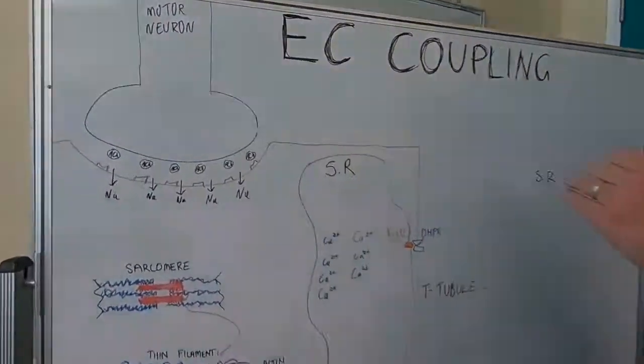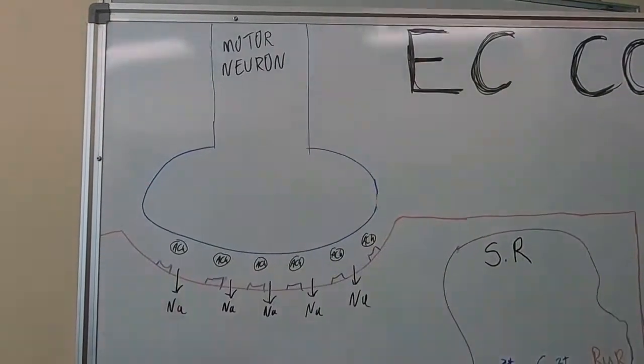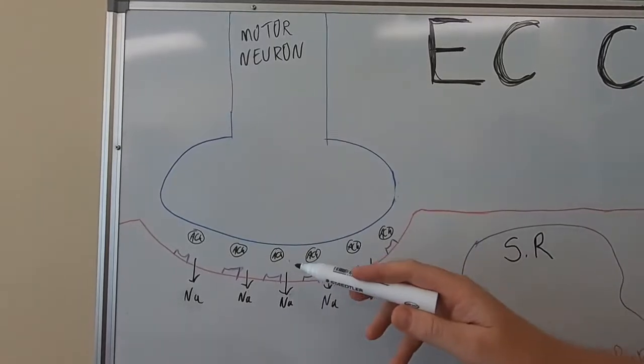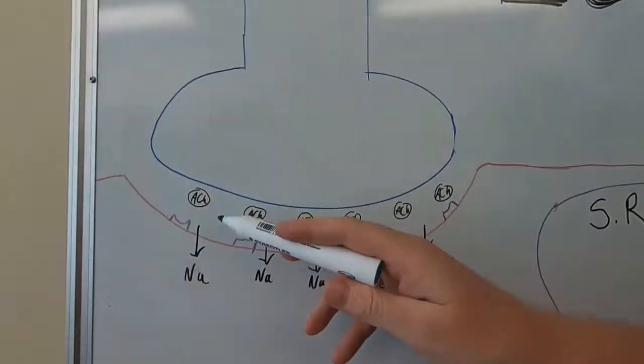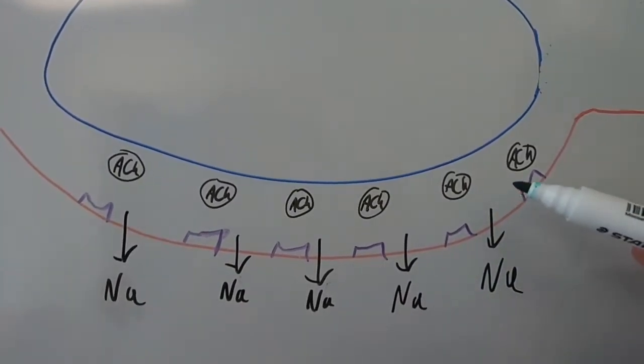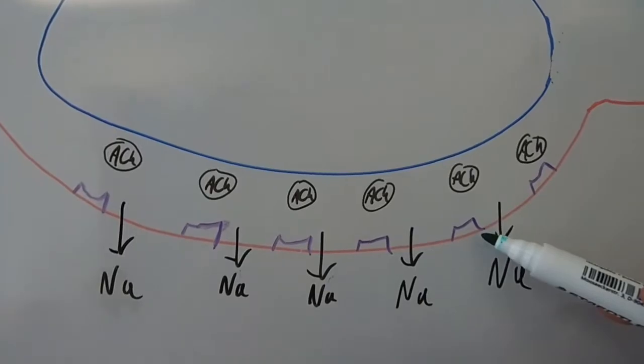So you decide you want to contract your muscle—you might be running, walking, or you just want to stand in the same spot—you're going to activate some skeletal muscle. In order to do that, your motor neuron will cause the release of acetylcholine, which for skeletal muscle is excitatory, and acetylcholine will bind to these acetylcholine receptors.